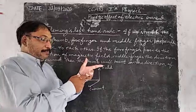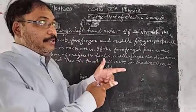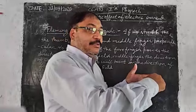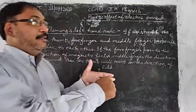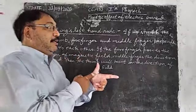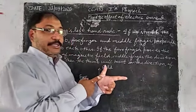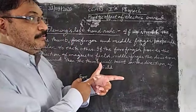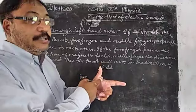So if the middle finger shows the direction of the current and forefinger shows the direction of magnetic field, then thumb will indicate the direction of force. The forefinger direction indicates which direction the conductor will move.